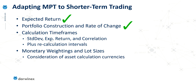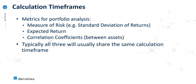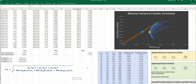This time I move on to calculation time frames. When talking about calculations, the main metrics needed for portfolio analysis are: first, a measure of risk — for this I've used the standard deviation of returns. Another metric is the expected return. And then we also need to calculate the correlation between all of the assets that we intend to trade, so that we can avoid having an over-correlated portfolio, which would introduce higher levels of risk. Typically, all of these calculations will share the same calculation time frame, and in the Excel examples I've provided previously, that's exactly what I've done.